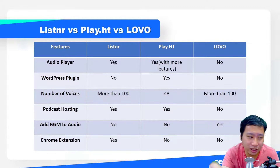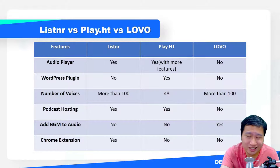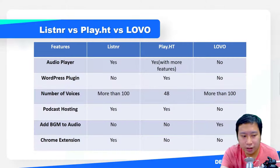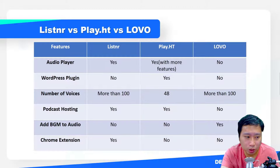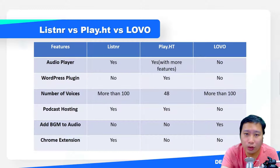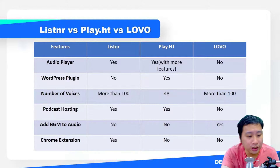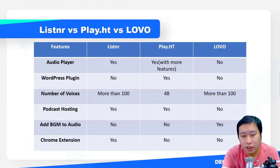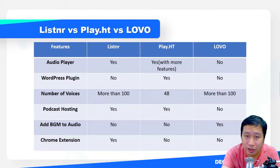PlayHT also has a WordPress plugin for easy player insertion. In terms of number of voices, Lovo has the most — close to 200 (around 170). Listner has more than 100 different voices, and PlayHT has about 47 or 48. For podcast hosting, Listner and PlayHT allow you to create your own podcast show with your own RSS feed. Lovo has the ability to add background music to your audio, which Listner and PlayHT do not currently offer.